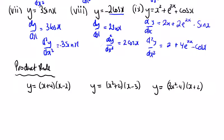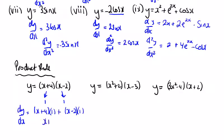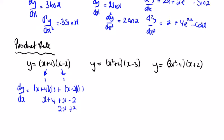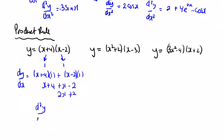So we've followed the same thing for the product rule — write down your differentiated functions, we have a 1 and a 1. dy dx: the first, x plus 4, by the second differentiated, plus the second, x minus 2, by the first differentiated, which is x plus 4 plus x minus 2, which is 2x plus 2. And we differentiate this a second time, and we're going to get just 2.